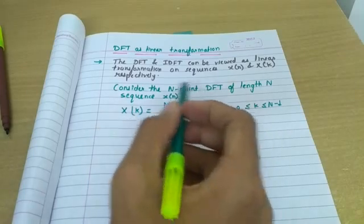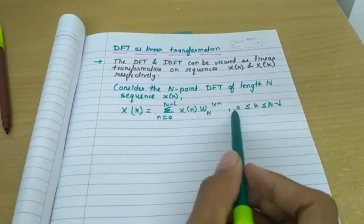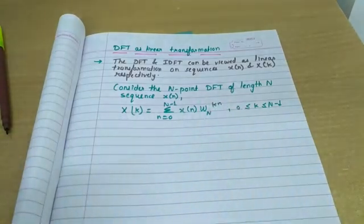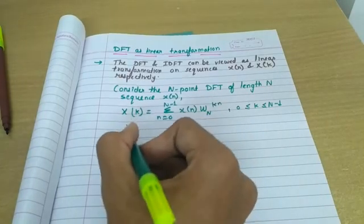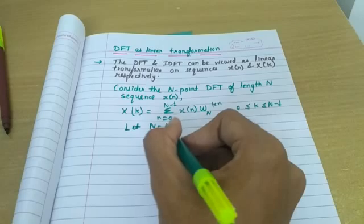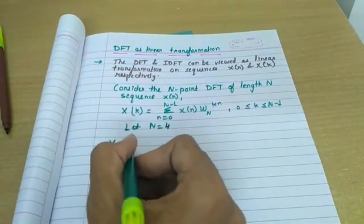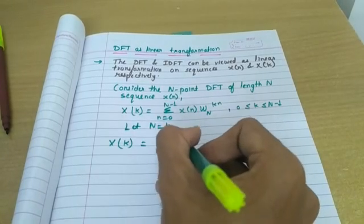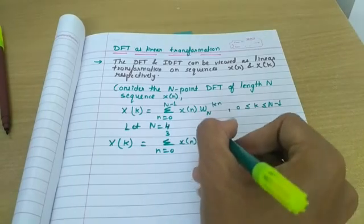Consider an N-point DFT of length-N sequence x(n). Its DFT is calculated by this formula, where W_N is the twiddle factor. This is the general formula for DFT. Now let N equal 4 for simplicity — at the end we will generalize — but let's say N equals 4. So X(k) can be written as the sum from n=0 to 3 of x(n) * W_4 raised to kn.